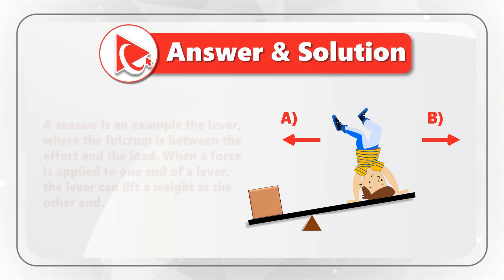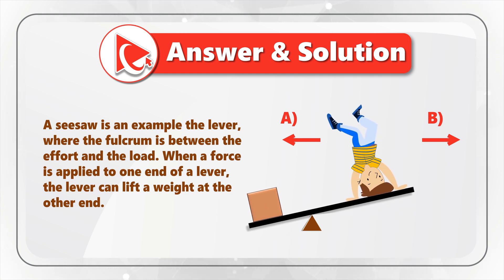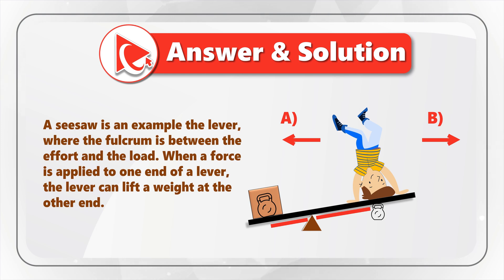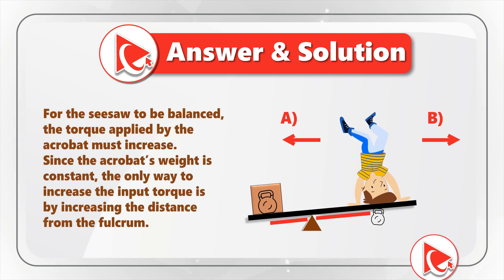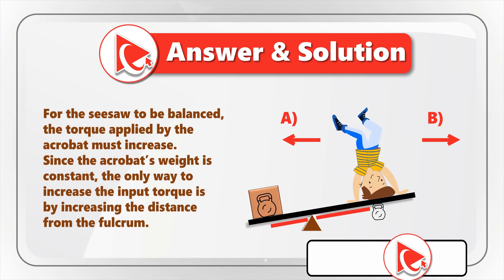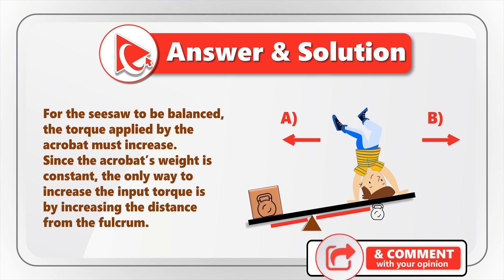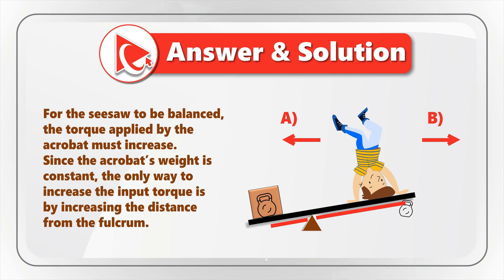The seesaw is an example of a lever, where a fulcrum is between the effort and the load. In our example, we have a weight on the left side and an acrobat on the right side. The key principle is that for the seesaw to be balanced, the torque applied by the acrobat must increase. Since the acrobat's weight is constant, the only way to increase the input torque is by increasing the distance from the fulcrum.